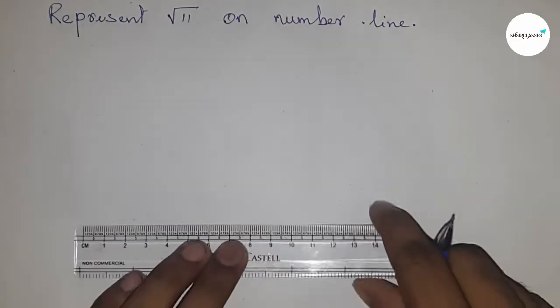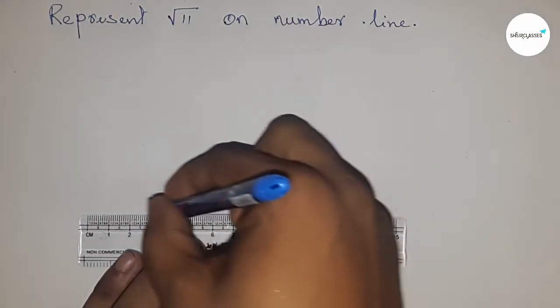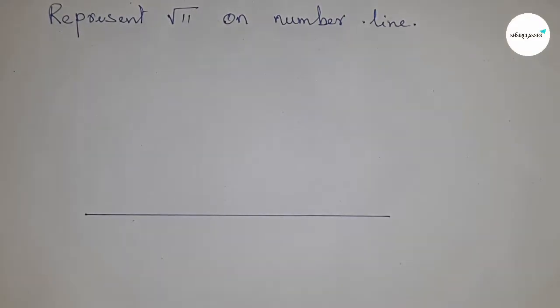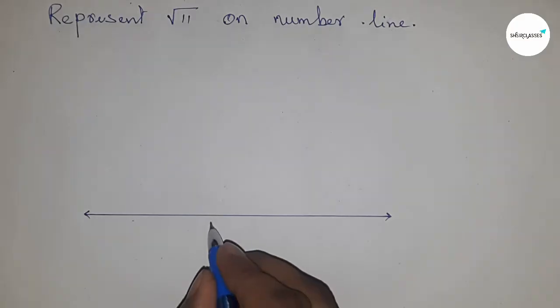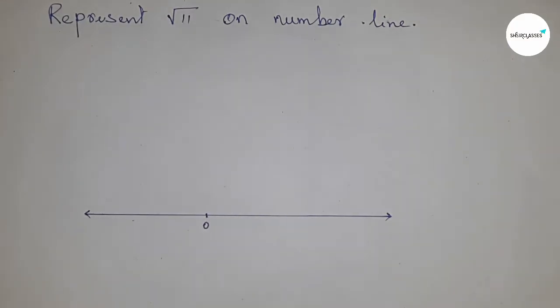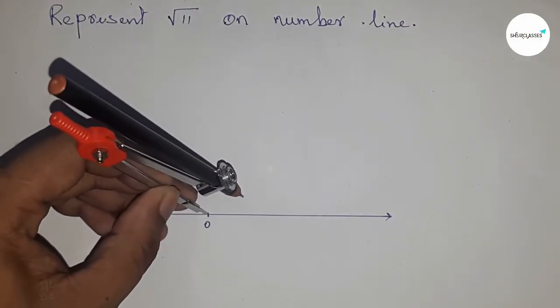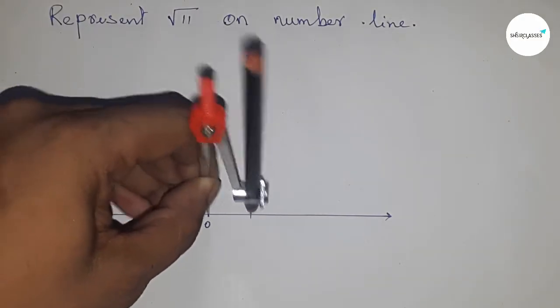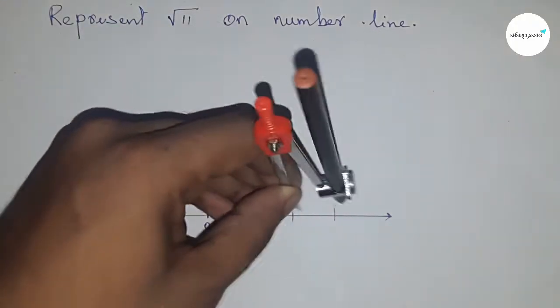Locating √11 on the number line. First, draw a line of any length, mark the end with an arrow to represent the number line, and mark this as zero. Next, mark all the numbers on the line using a compass with unit length to cut the line.